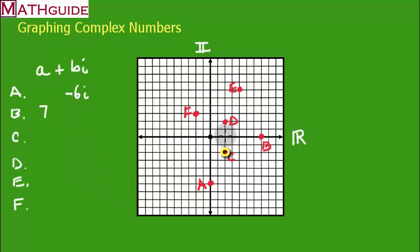C is two to the right, two down. So that's two for the real and minus two for the imaginary. Let's talk about D, that's two to the right, two up. So that's two for the real and 2I for the imaginary.